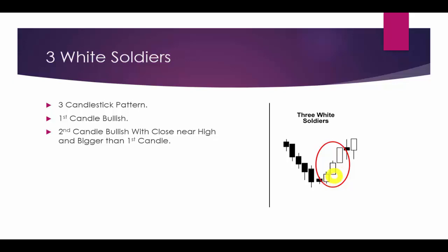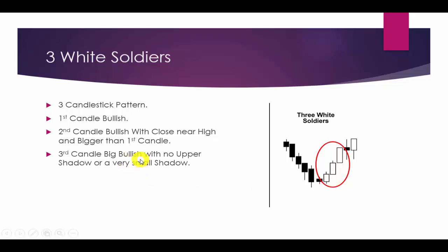The third candle is very important — it confirms the Three White Soldiers pattern. It should be a big bullish candle, at least bigger than the second candle, with no upper shadow or only a very small upper shadow. If the third candle is smaller than the second candle, the pattern is incomplete. But if it is bigger, we have confirmation of Three White Soldiers.